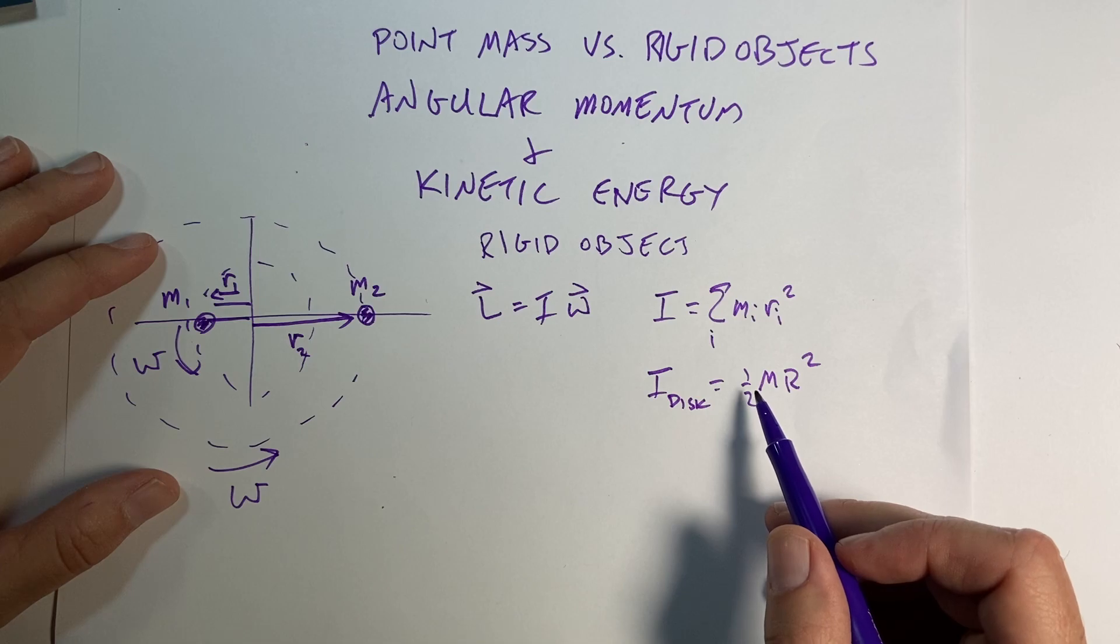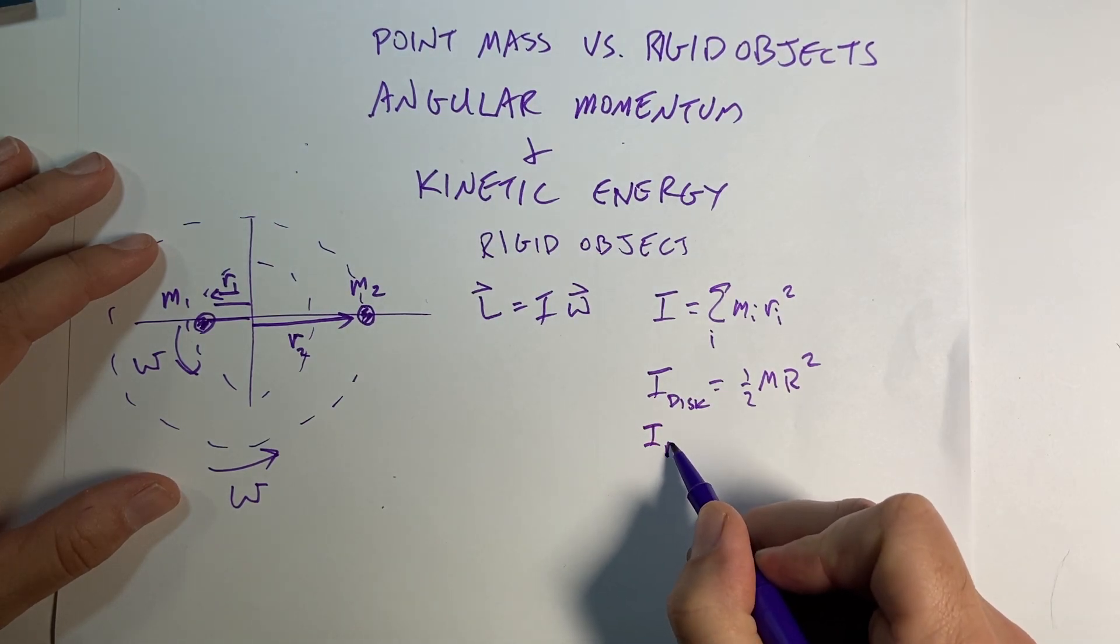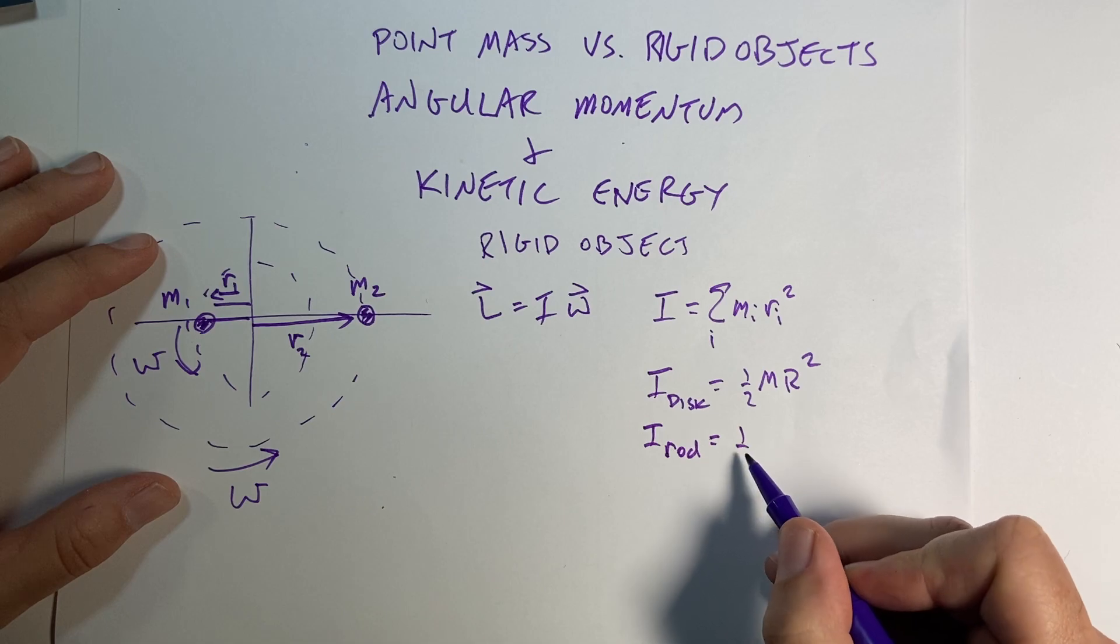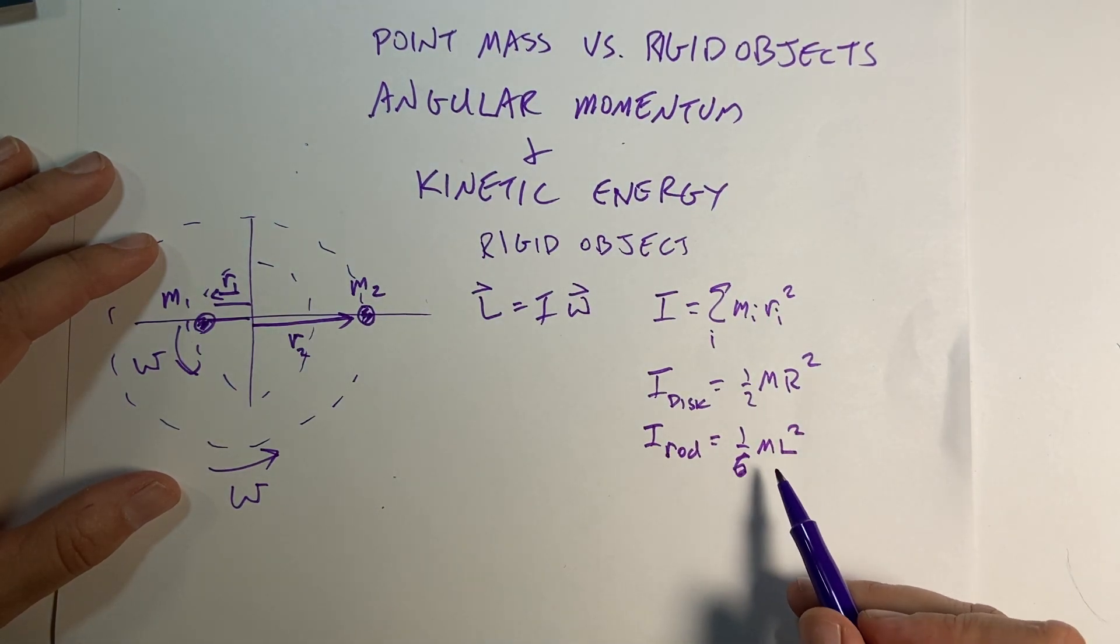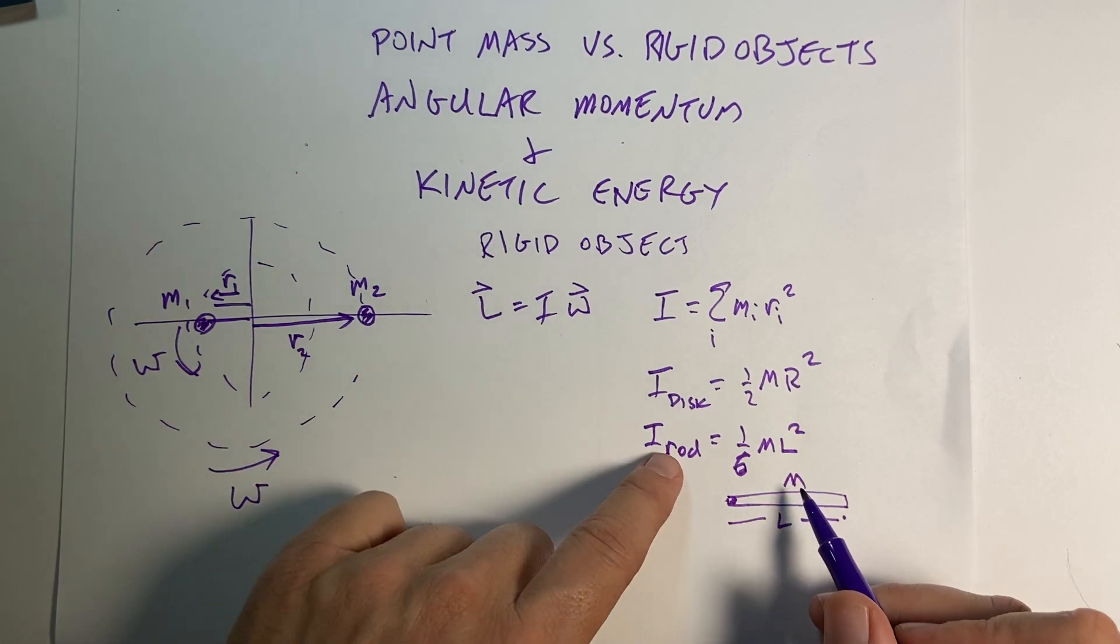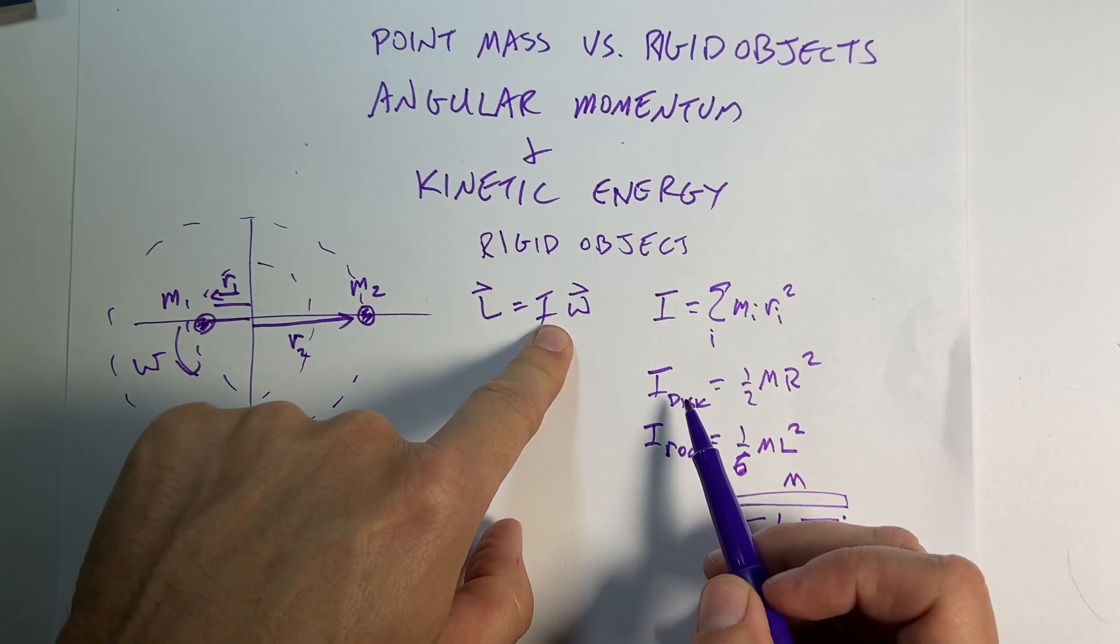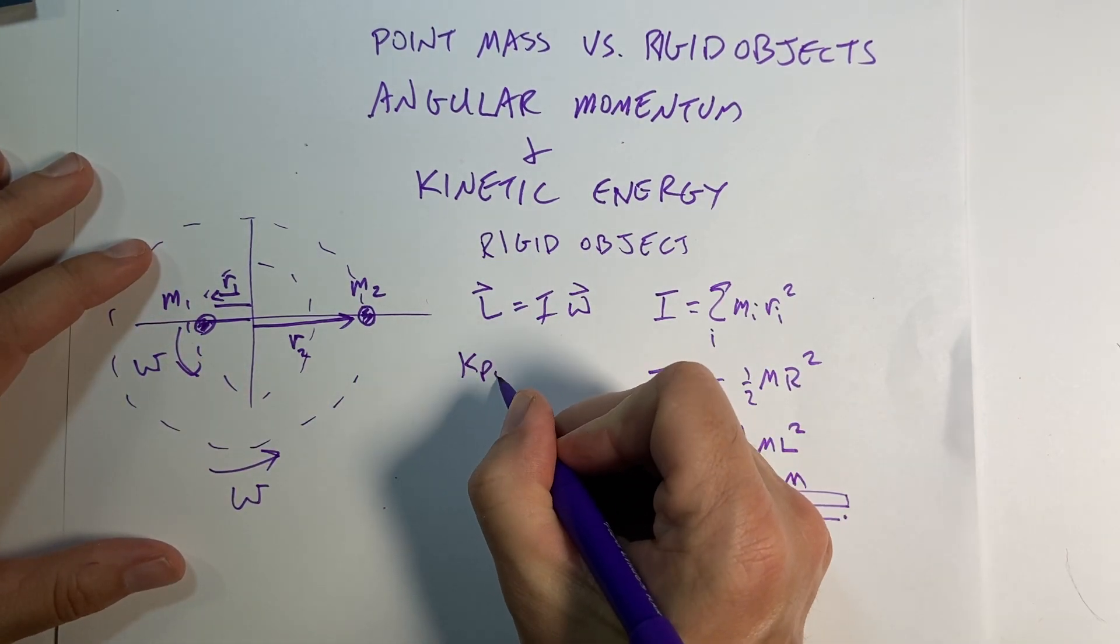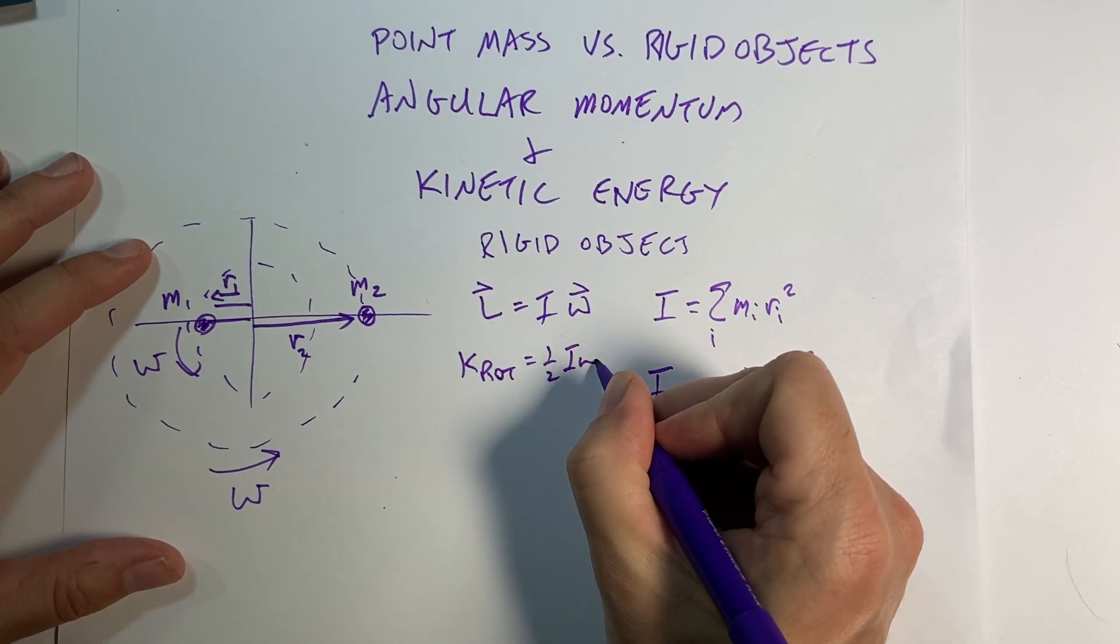If you have I of a rod about one end, it's one sixth m L squared, I think, and that could be wrong, but so like if here's your stick and you rotate about this end and that's the length and that's the m, so these you'd have to look up or derive. But that's the angular momentum. And then we have the rotational kinetic energy and that's one half I omega squared.